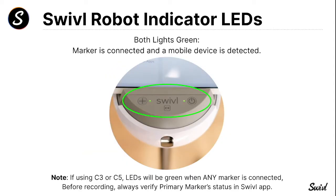There are two LED indicators on the front of the Swivel robot, right where the iPad slots in. A solid red light on the left means the marker is not connected. A solid green light on the right means the mobile device is successfully connected via the lightning cable. When both lights are green, the marker is connected and the device is detected. The lightning cable comes included, but if your iPad doesn't have a lightning port, you'll need a different cable or adapter.